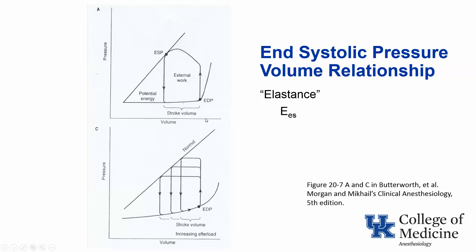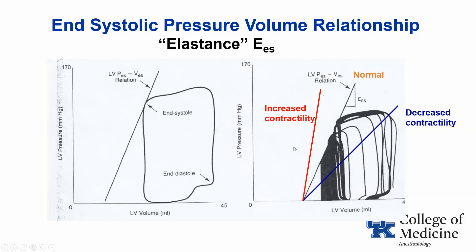One of the most popular experimental ways of measuring contractility is the end-systolic pressure-volume relationship. What is done is to vary the preload and plot the slope of this curve with various preloads. The points all lie along a line whose slope is called elastance, and that slope reflects contractility. Here is a set of curves in which preload was varied and a slope generated. If you increase contractility, this slope will become steeper; conversely, if you depress contractility, the slope will become more shallow.